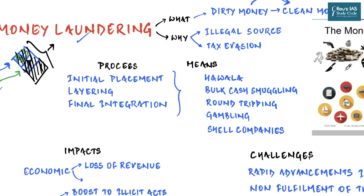Money laundering is done for two reasons: either the source of income is illegal or illegitimate — for example drug trafficking and various criminal activities — or the source is legitimate but the earner is unwilling to pay taxes. Even professionals like doctors, builders, and businessmen with legitimate income can resort to money laundering to evade taxes by not showing their full income and instead adopting complex financial procedures.